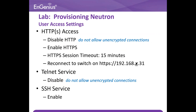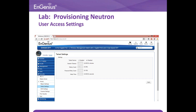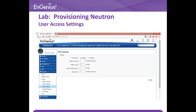Change user access settings such as HTTPS, TELNET and SSH service. This page shows the HTTP setting and timeout. This is where TELNET setting can be done. This is the page for making changes for SSH service.